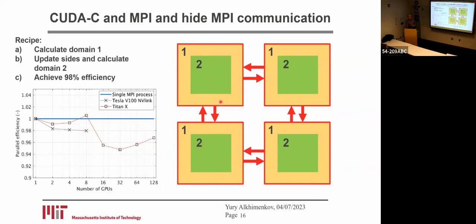Each GPU first completes domain one, then we calculate domain two. At the same time, we exchange boundary points between GPUs. Each GPU is used to calculate its particular domain.